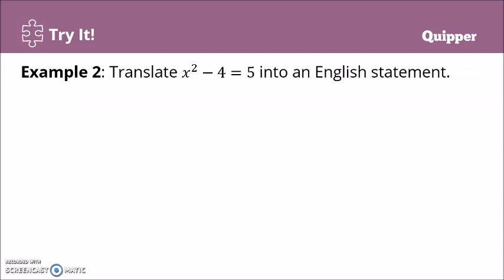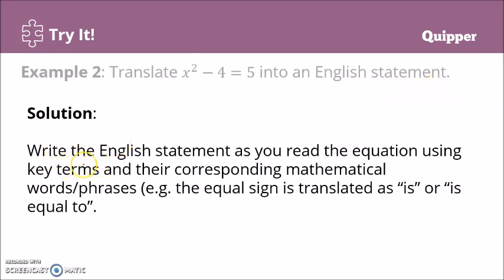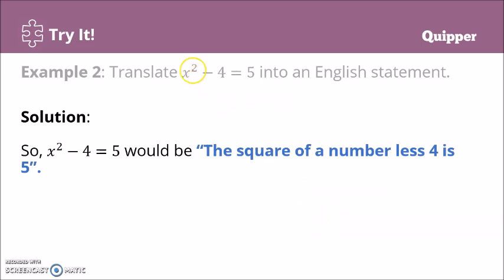Let's have an example: translate x squared minus 4 equals 5 into an English statement. Take note that we write the English statement as you read the equation using key terms. The equal sign is translated as 'is' or 'is equal to' or 'equals.' So x squared minus 4 equals 5 becomes: 'The square of a number, less 4, is 5.'